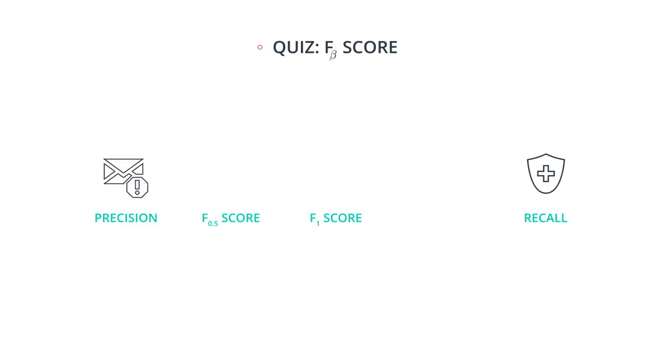Or if we want our model to care more about the recall, then we move in the other direction and we pick a larger beta, say beta equals 2, so our metric is F2.